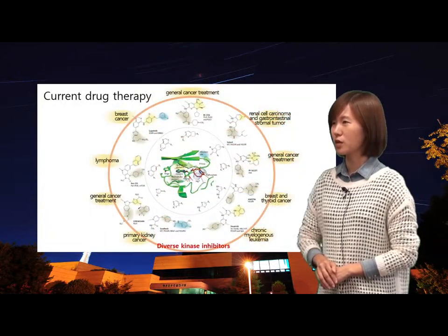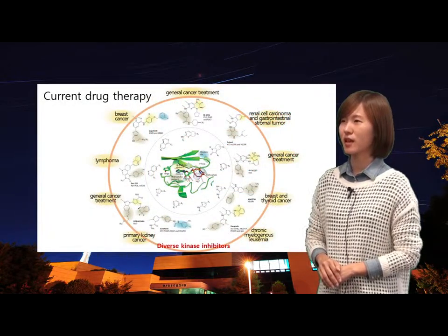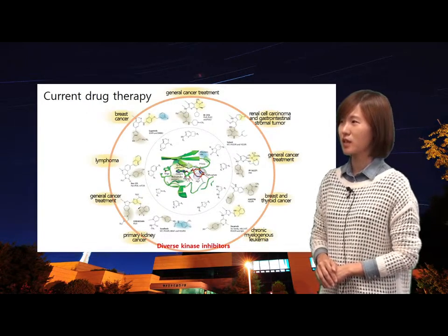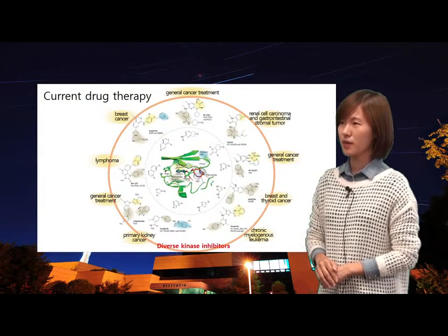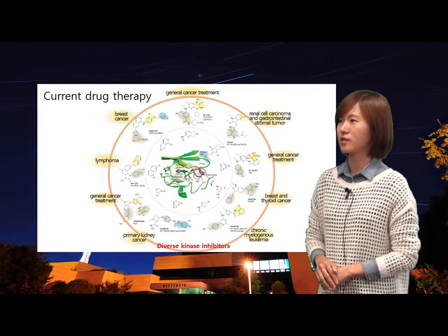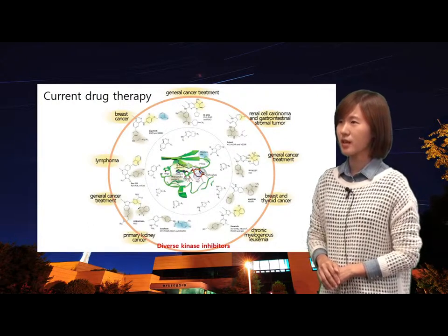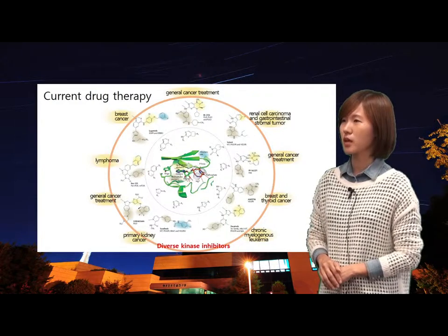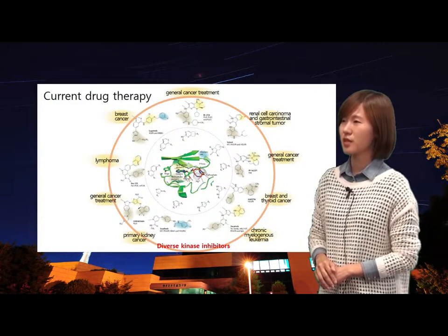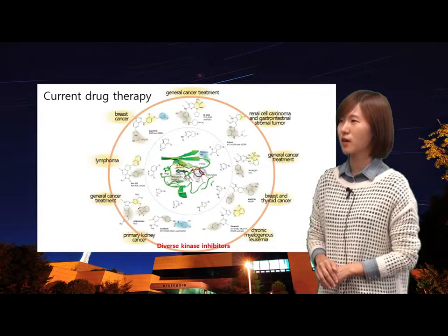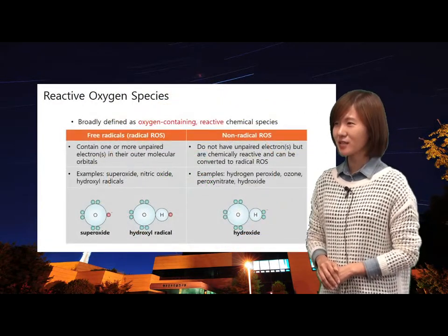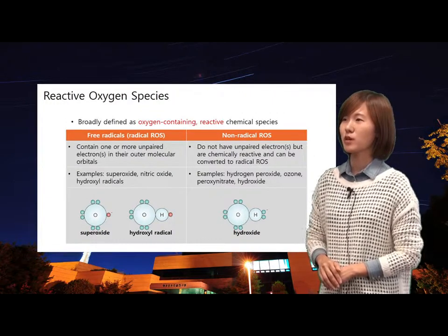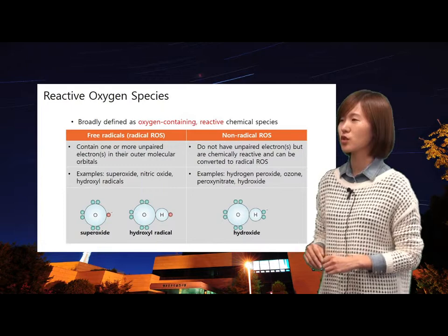Let's look at current drug therapies for cancer cells. These are various kinds of drugs — some are in clinical trials and some are already registered. Most of them work as kinase inhibitors. Since phosphorylation is the major regulation mechanism of cell signaling, kinase inhibitors can regulate a variety of cell functions. But the main point of this lecture is to propose another kind of mechanism using reactive oxygen species to kill cancer cells.